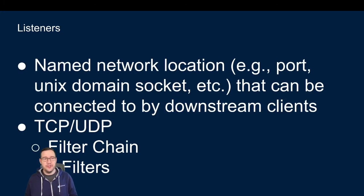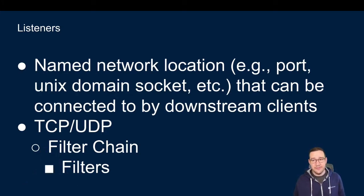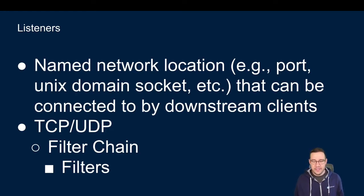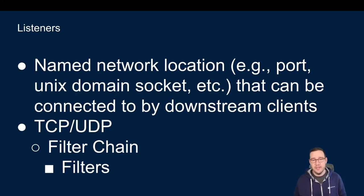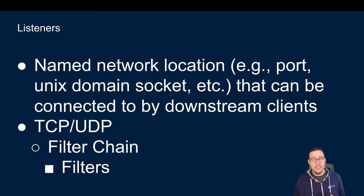When we talk about downstream, the first thing we introduce is a listener. A listener is a named network location that downstream clients connect to — it will be a TCP or UDP connection. You can also apply filters and chain them together. Filters in Envoy are the extension magic — they let you take TCP connections and do different things with them. In our demo, we're going to build an L7 or HTTP type network proxy, which is kind of what Contour is. The TCP connection will run through a filter that turns it into HTTP headers, requests, and responses, making it easier to do L7 routing.